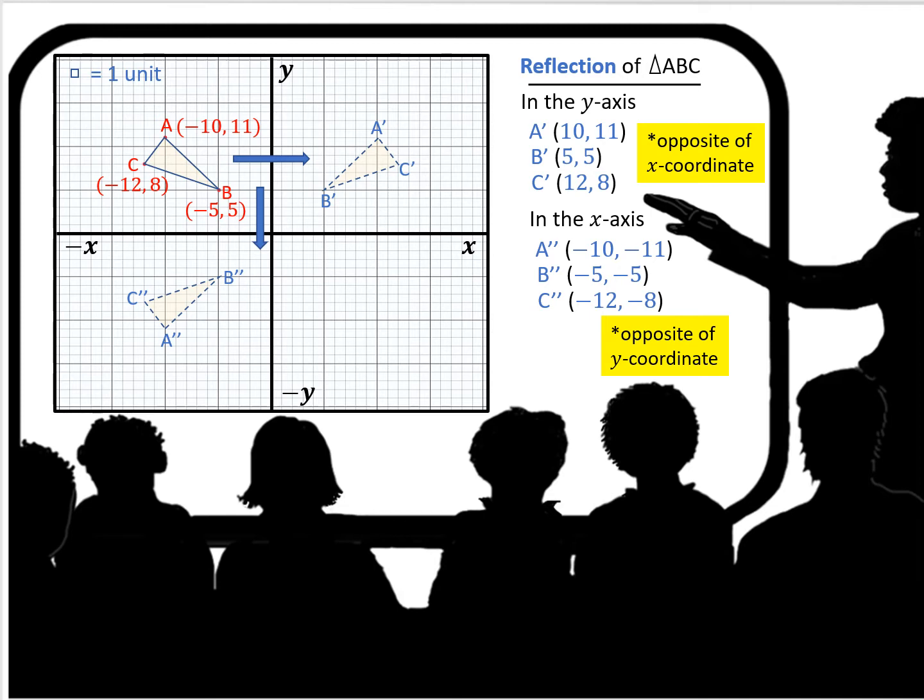So for the A coordinate here, coordinates you have negative 10, 11. So again, you're going to have opposite of the x coordinate. So it's going to be positive 10, and then the y coordinate is going to be the same, 11. Likewise with B prime and C prime, you do the same thing.